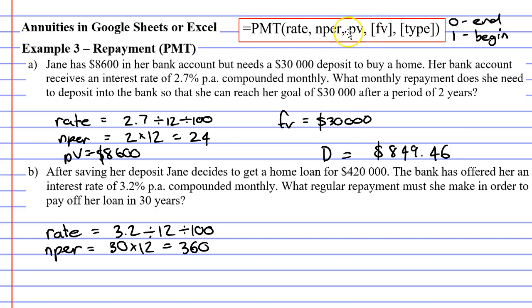We also need to know what our present value is. The loan that Jane is getting is $420,000. The bank is going to lend her this money at the beginning, and Jane is going to pay it off over a period of 30 years. So the present value is going to be $420,000.